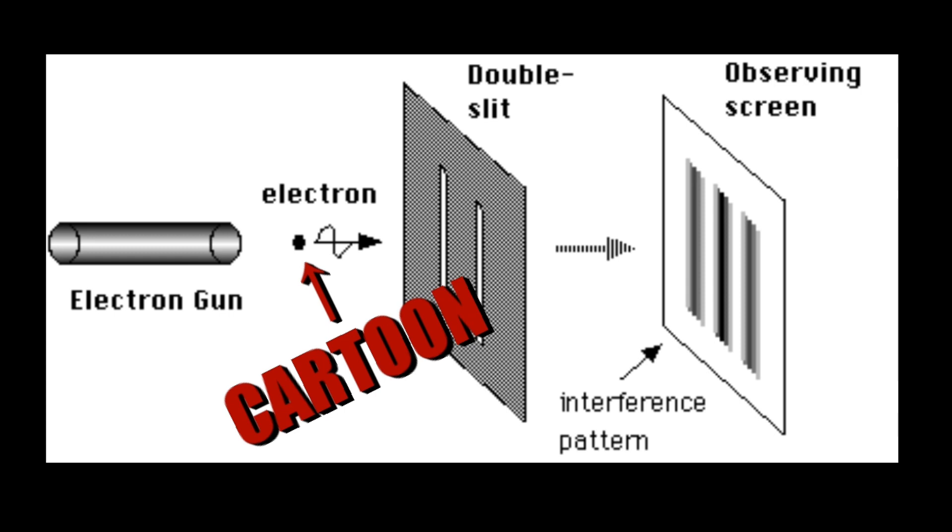If a particle were to change into a wave, any observation we could make of such a phenomena would be inescapably skewed by the fact that our principal particle is attached to neighboring particles.